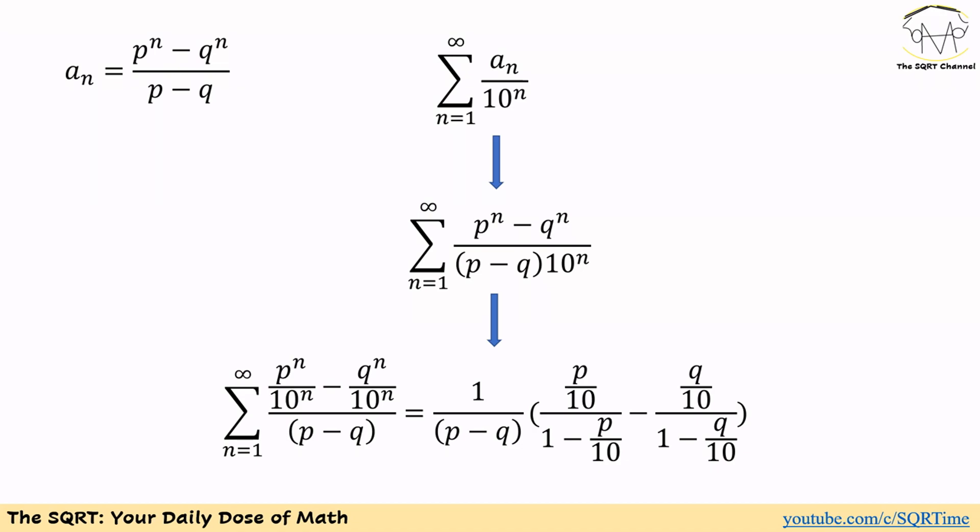Let's simplify the fraction further. We have P to the power of n, Q to the power of n, and 10 to the power of n. I'm going to write P to the power of n as P to the power of n over 10 to the power of n, and do the same for Q to the power of n. The whole expression can then be written as what you are seeing here.